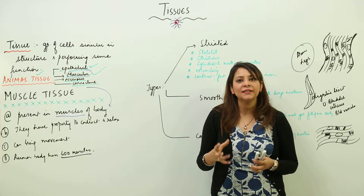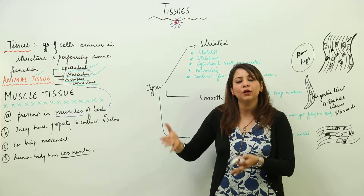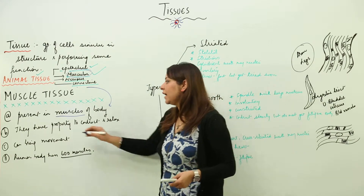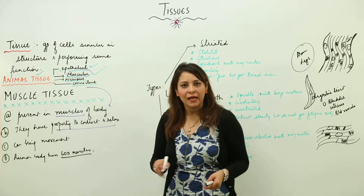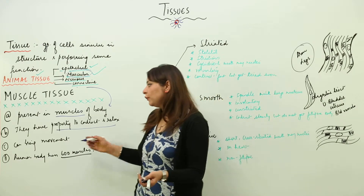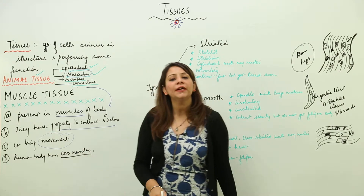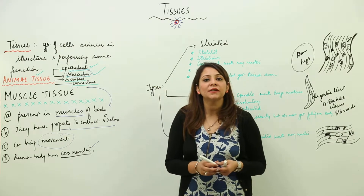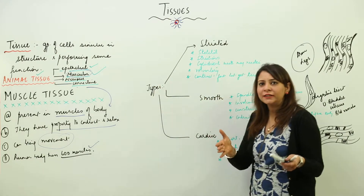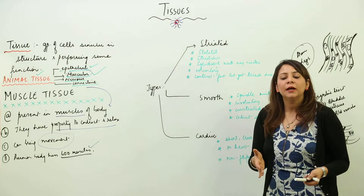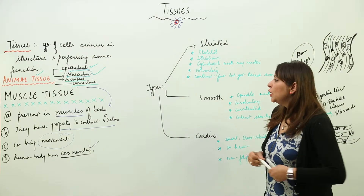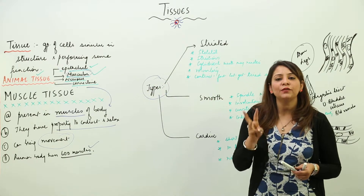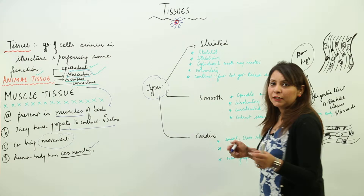Muscles have a special property that they can contract and relax. Their rhythmic contraction and relaxation helps us to move. So their contraction and relaxation brings about movement in us. Approximately 600 muscles are present in the human body — that is the actual number. Now, there are three types of muscles present in the animal body: striated, smooth, and cardiac.